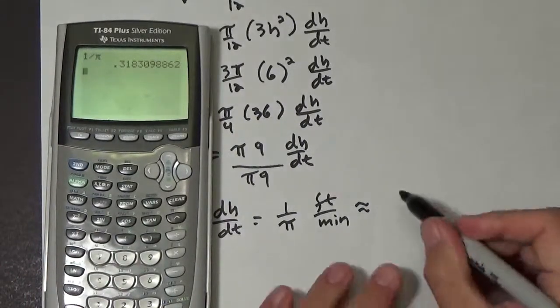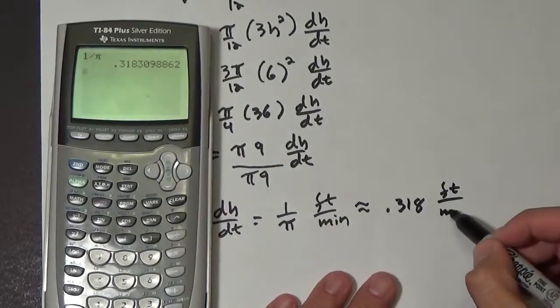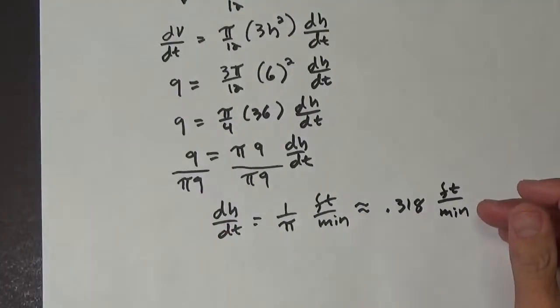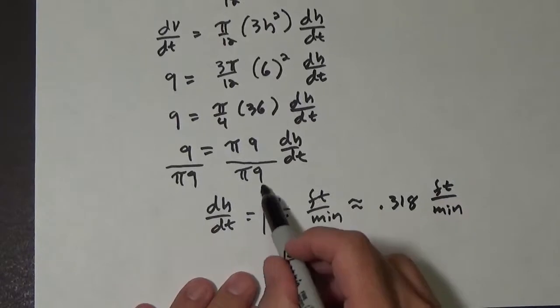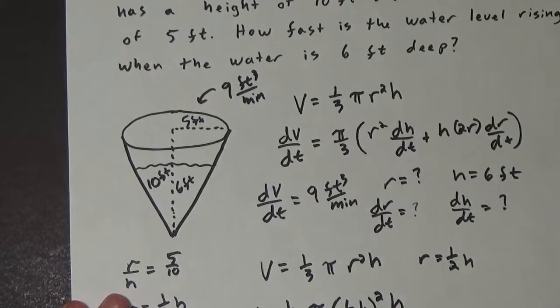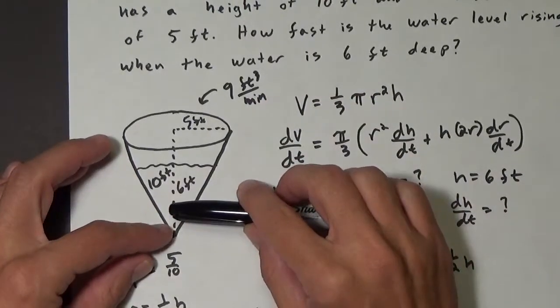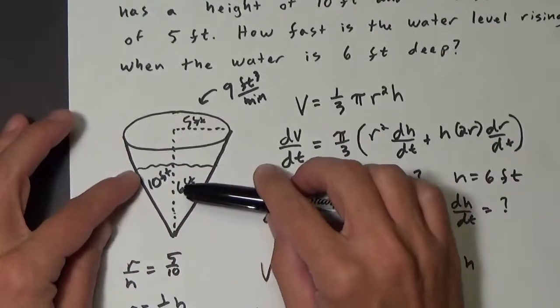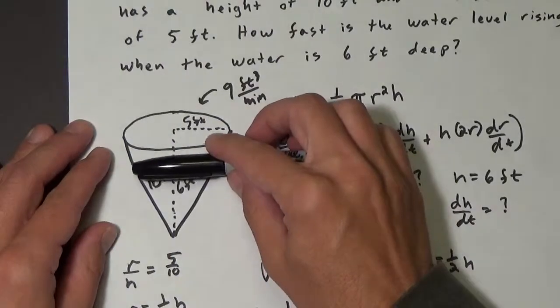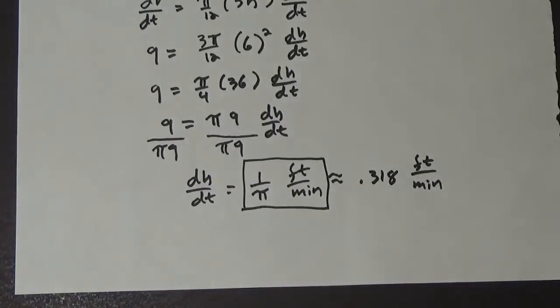Which is approximately .318 feet per minute. Okay, so here's our answer. But anyways, we have this, and this is a big tank, 10 feet deep and 5 feet radius. But if water's coming in at 9 feet cubed per minute, and as it's going up, now of course at first it's rising much faster because there's not much volume down here, but as it keeps on getting bigger and bigger, the rate that it keeps on increasing gets slower and slower and slower. So when it's 6 feet deep, it is only going .318 feet per minute.